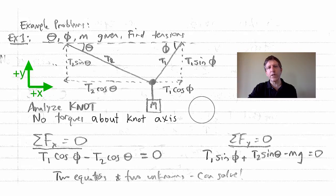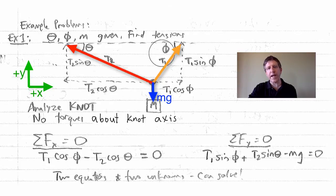Again, free body diagram is critical. We've got these two tensions right here, T1 and T2, they will not be equal if these angles are not equal. We divide each of the tensions up into components. This is T2, so that'll be T2 sine theta, if that's theta. This'll be T2 cosine theta, if that's theta.